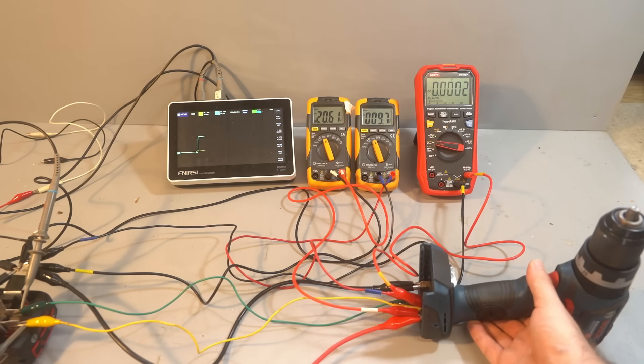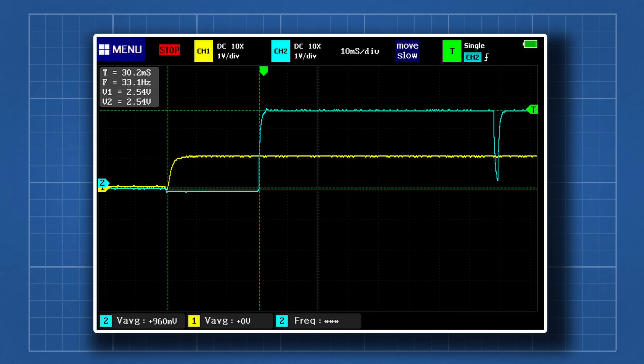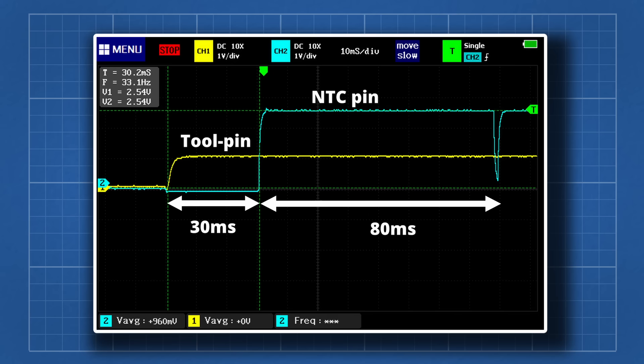When you squeeze the trigger, the tool outputs 3.3V on the tool pin. If it measures the correct voltage from the battery, then 30ms later the tool will output 3.3V on the NTC pin. If that is within range, then 80ms later the tool will start.